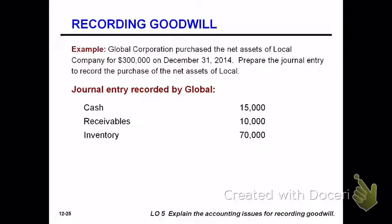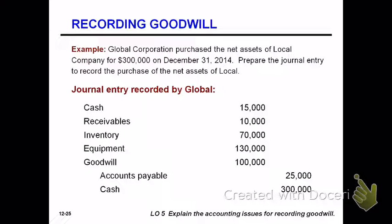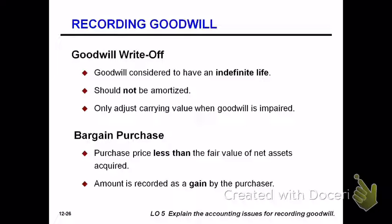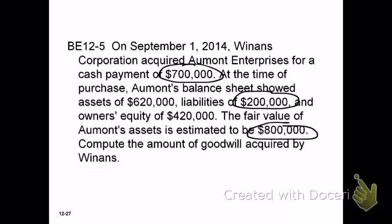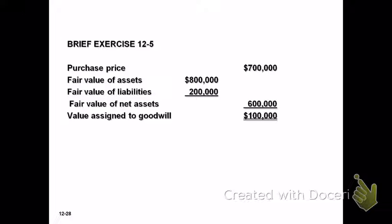The journal entry Global records when acquiring Local Company's assets shows all items at fair market value, with goodwill included for the entry to balance. Goodwill is considered to have an indefinite life, so it is not amortized, but it must be tested for impairment at least annually. A bargain purchase is like negative goodwill — when you pay less than the fair value of the identifiable net assets. Rather than recording it as a liability or negative goodwill, it is recognized through the income statement as a gain. For example, purchasing a company for $700,000 when the fair value of identifiable net assets is $600,000 yields goodwill of $100,000.